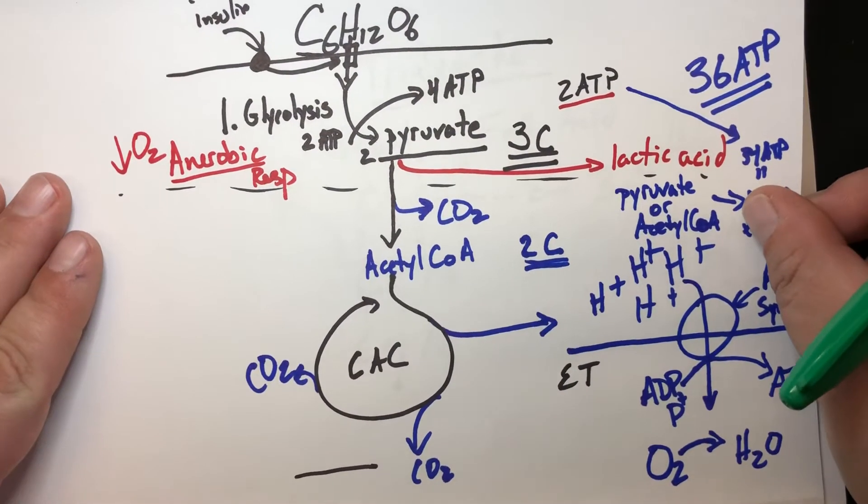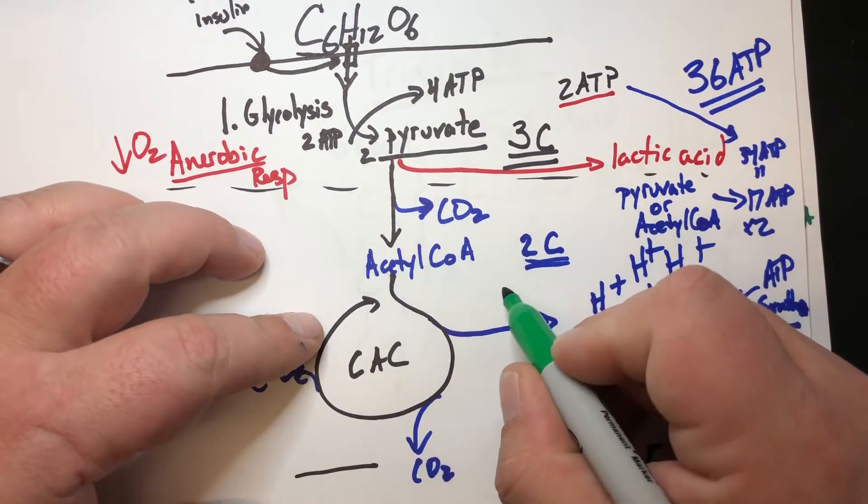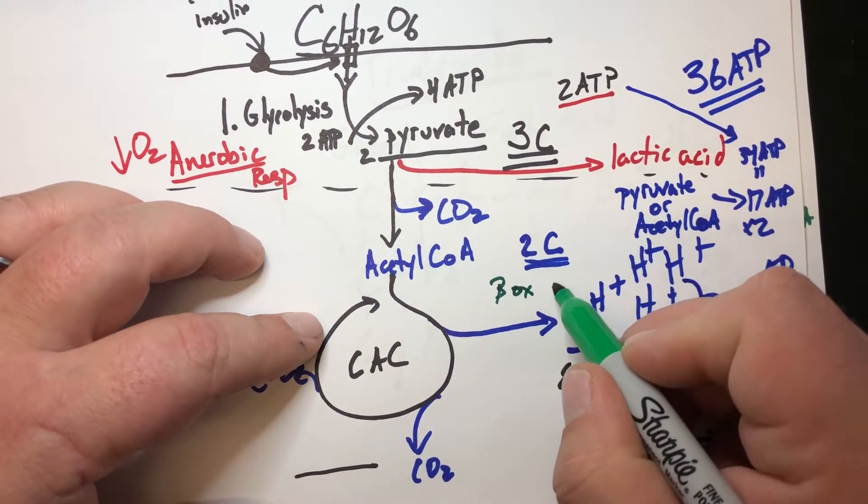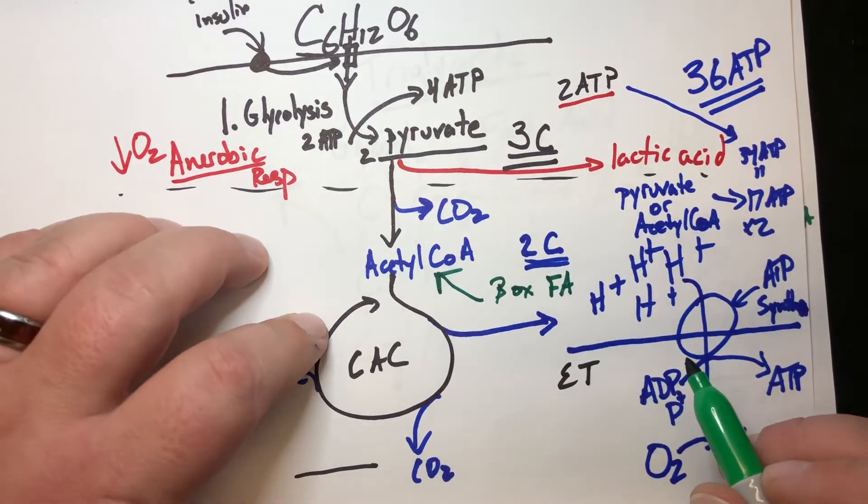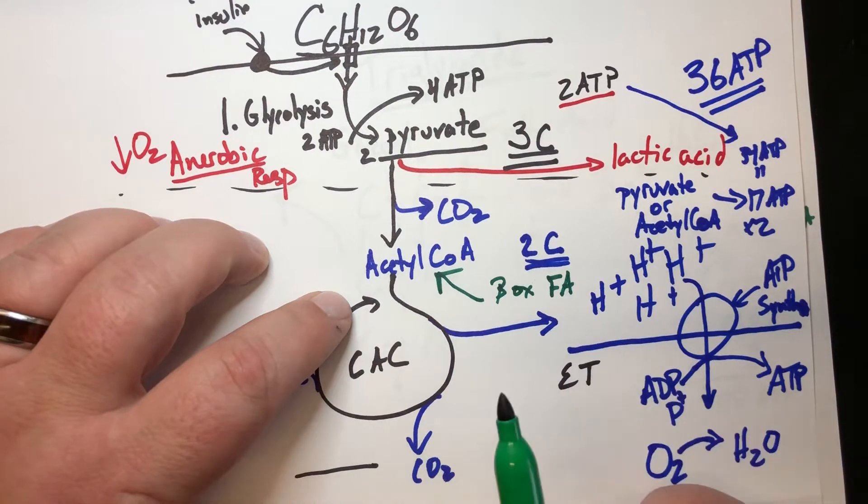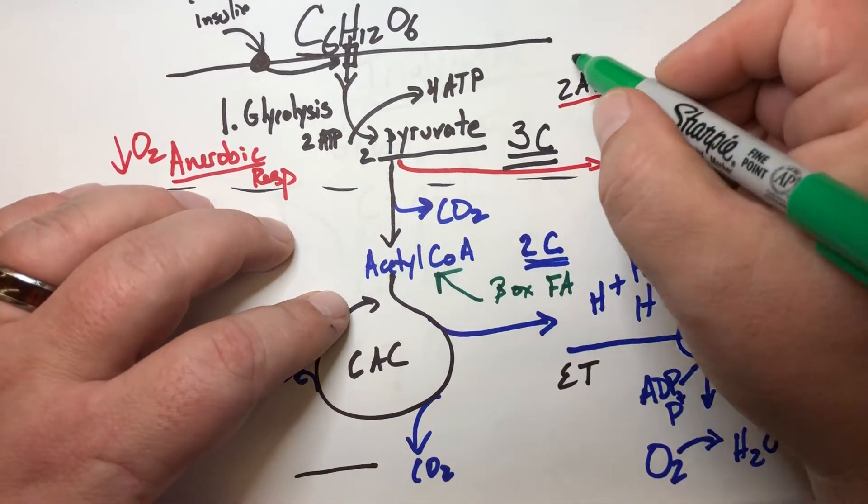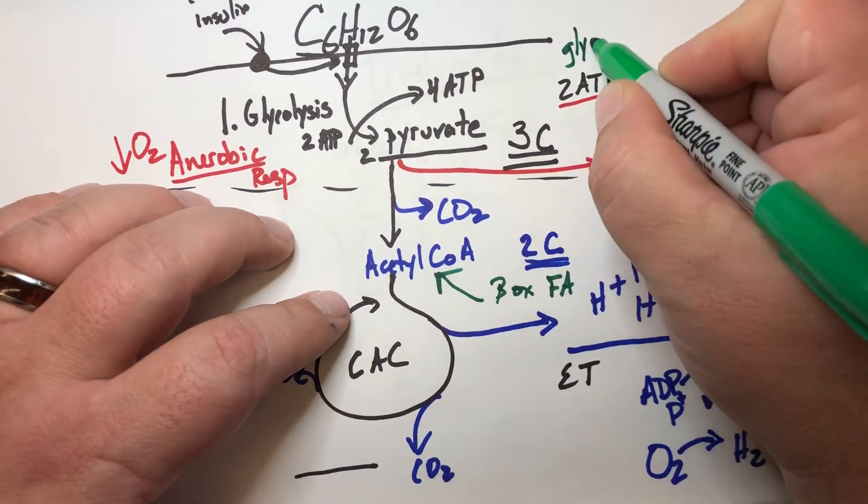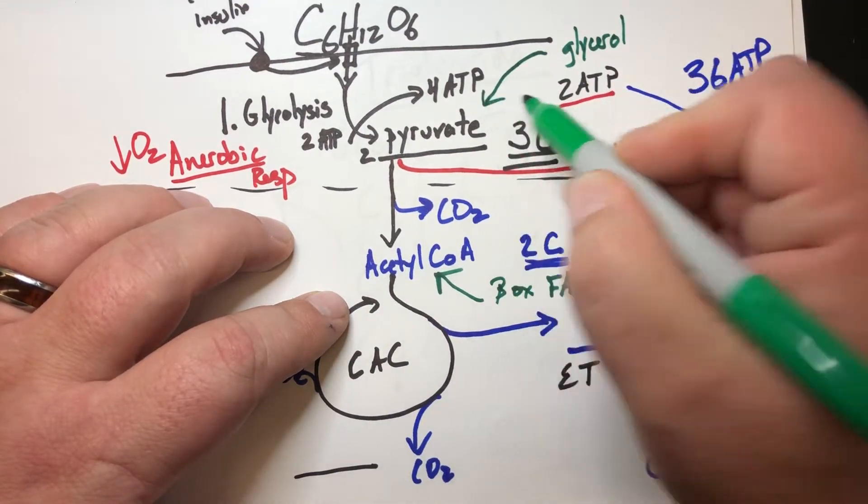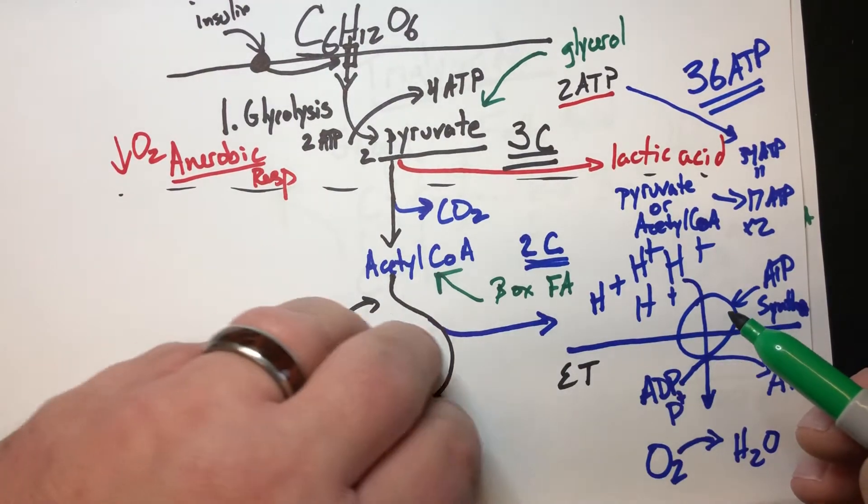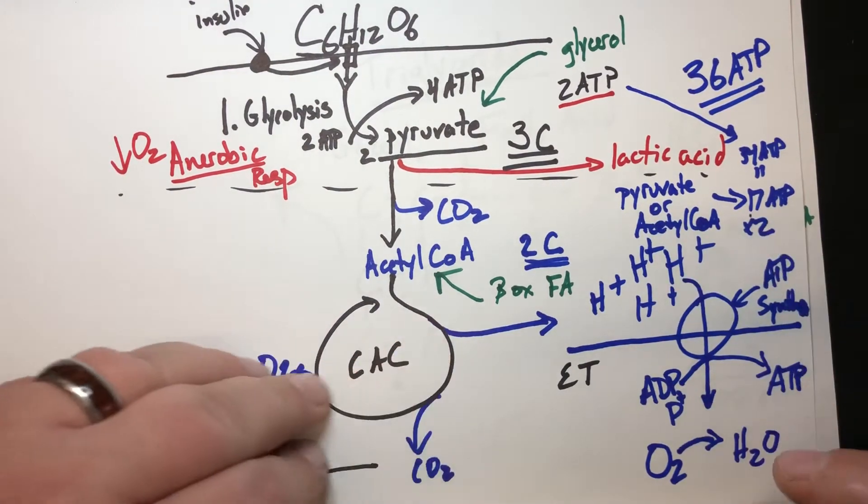So back to our glucose chart here, as long as we're using beta-oxidation, we can take those fatty acid chains, dump those in at the level of acetyl-CoA. With that glycerol, we can end up using that glycerol at a stage where we pump it in at the pyruvate level, and again, from that pyruvate 17 ATP.